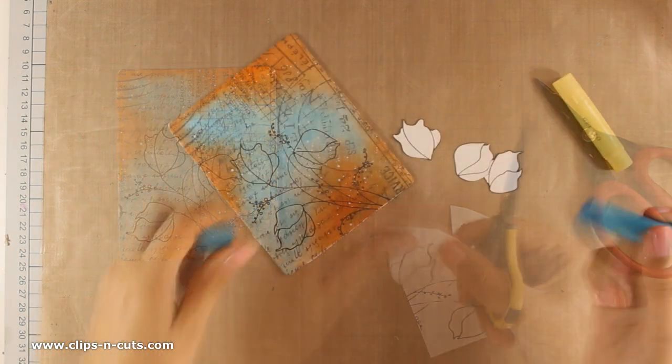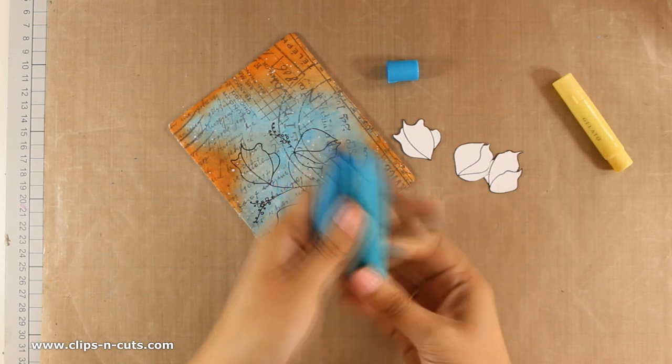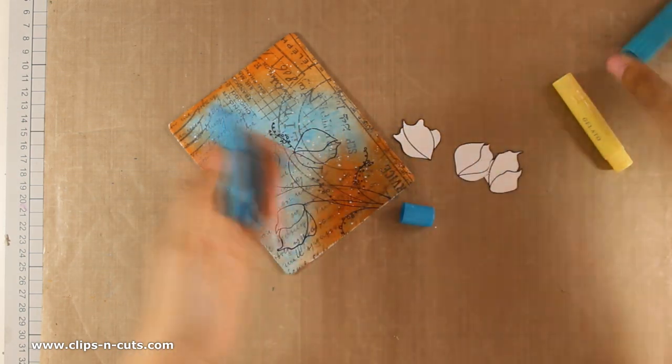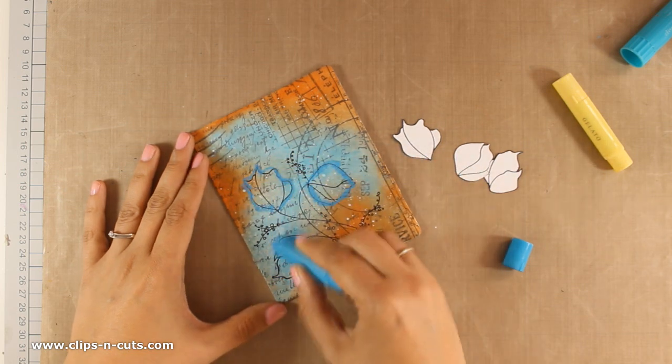I am switching to a tinier scissor there, and once I have all the flowers cut out, I am going to use my gelatos to color and shade my flowers. First of all, I am going to use a slightly darker color of gelato than my background and go around the shape of the flowers.